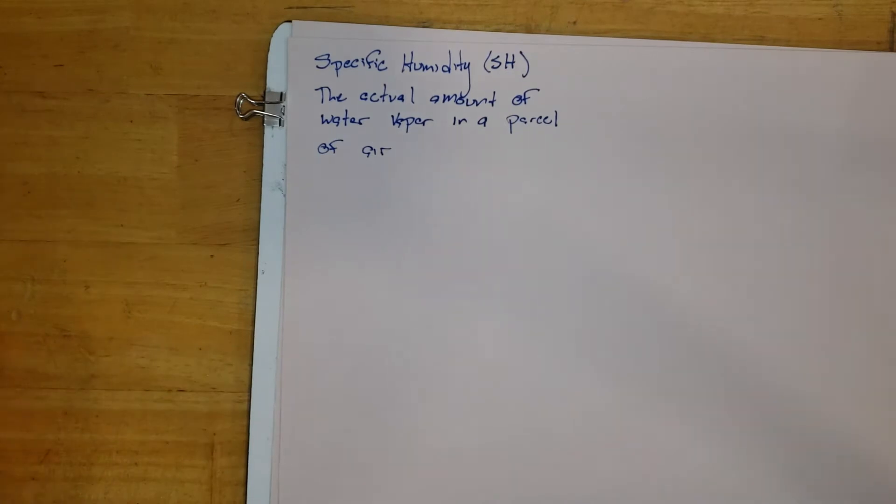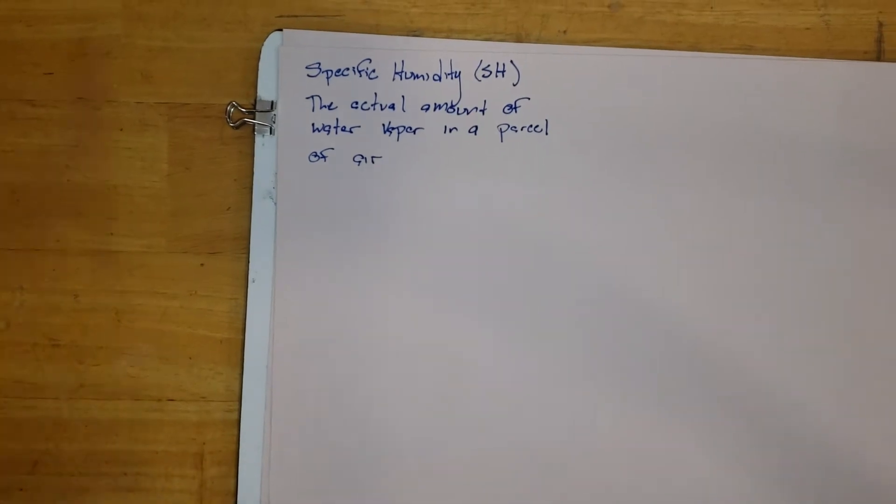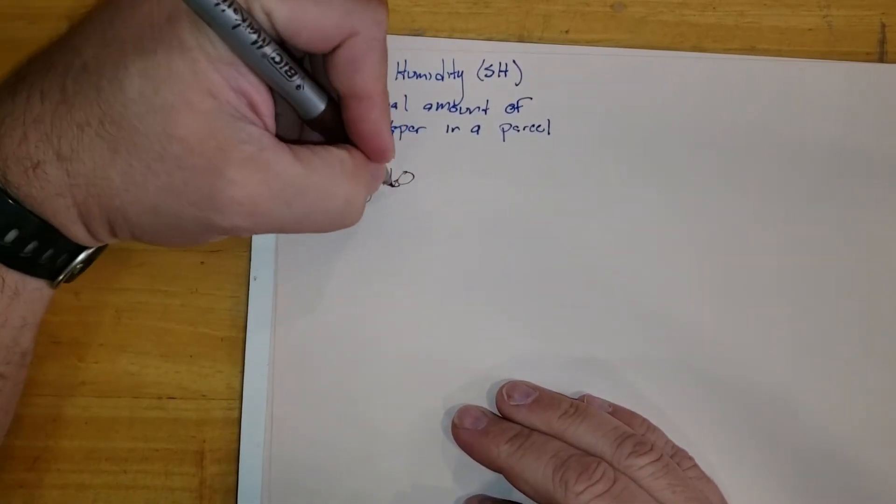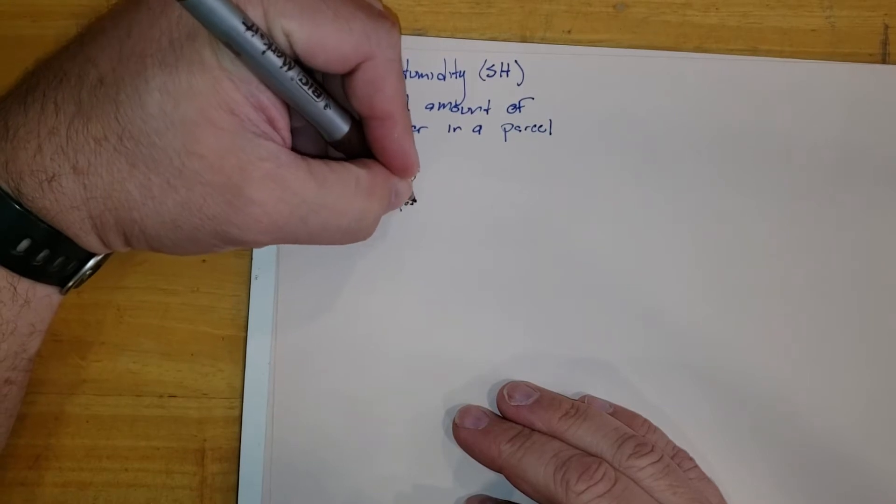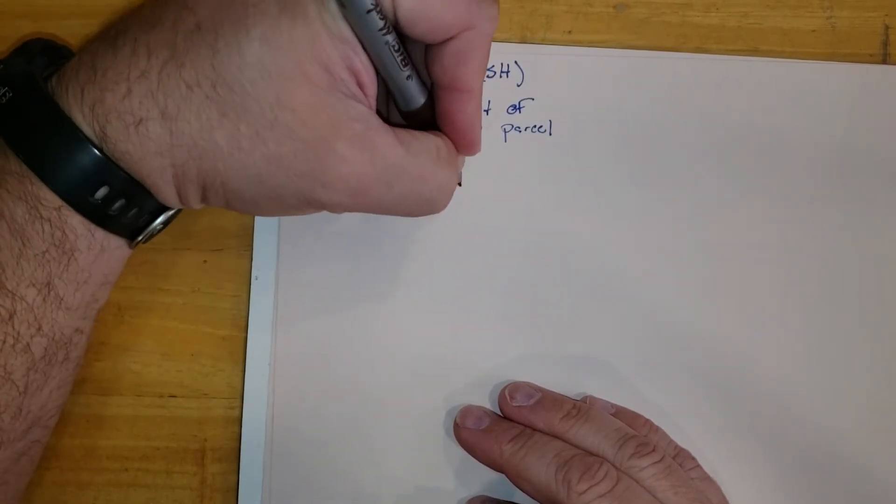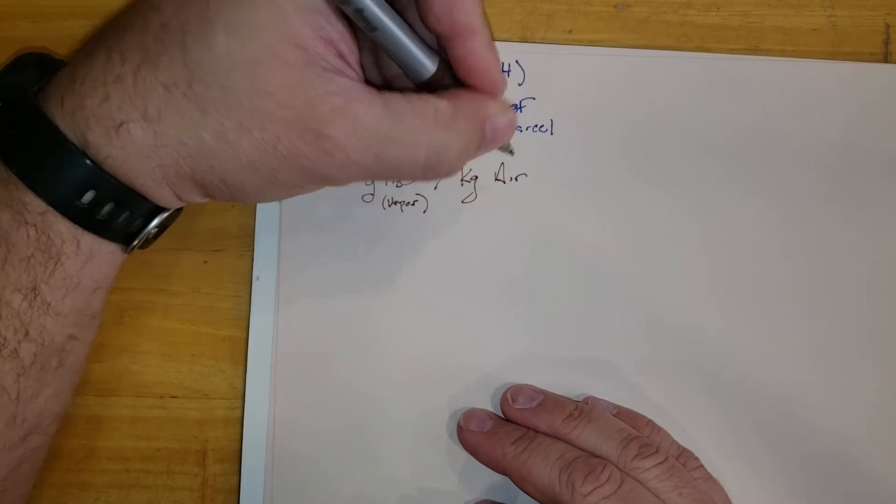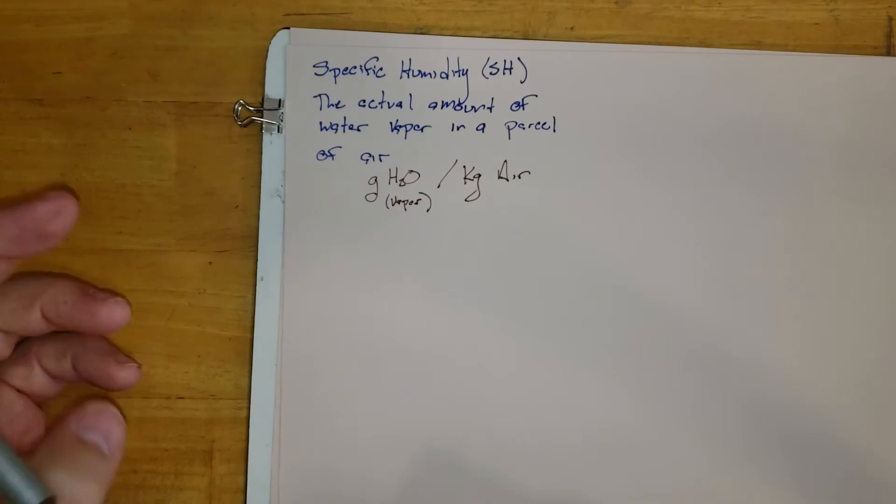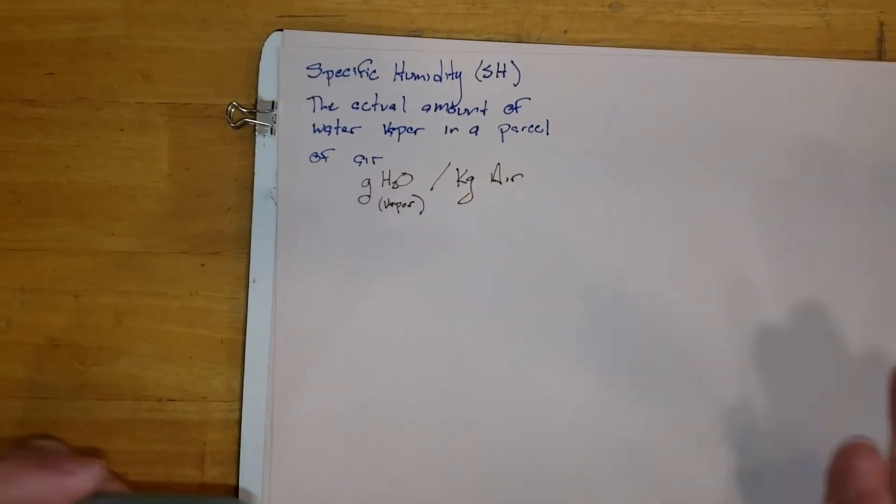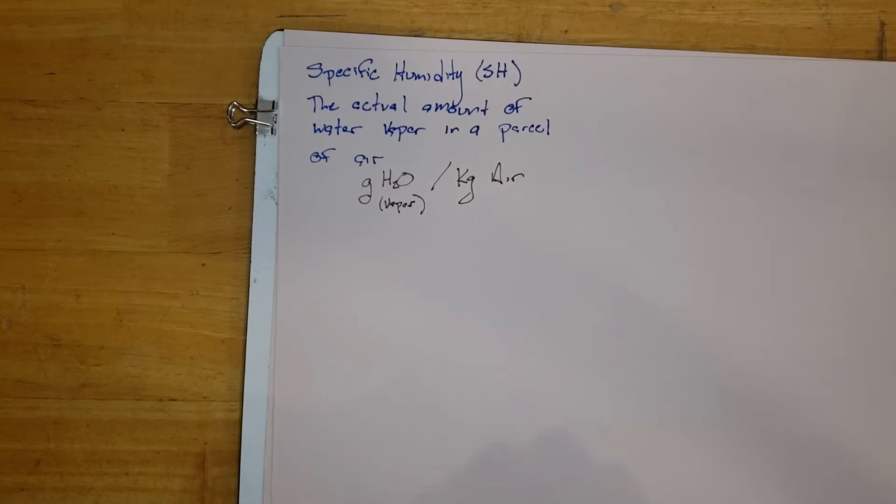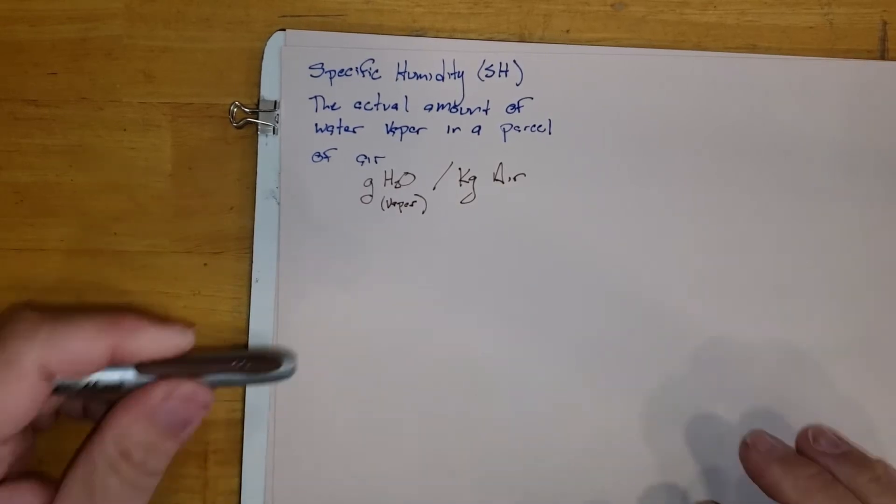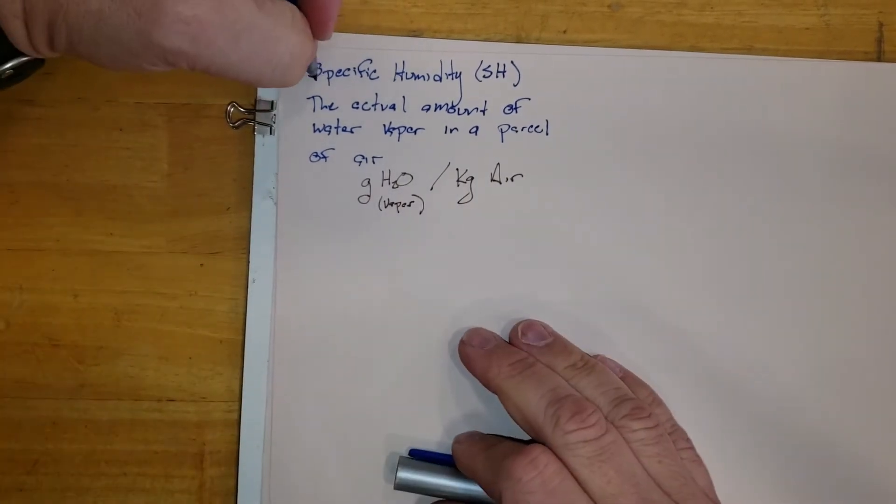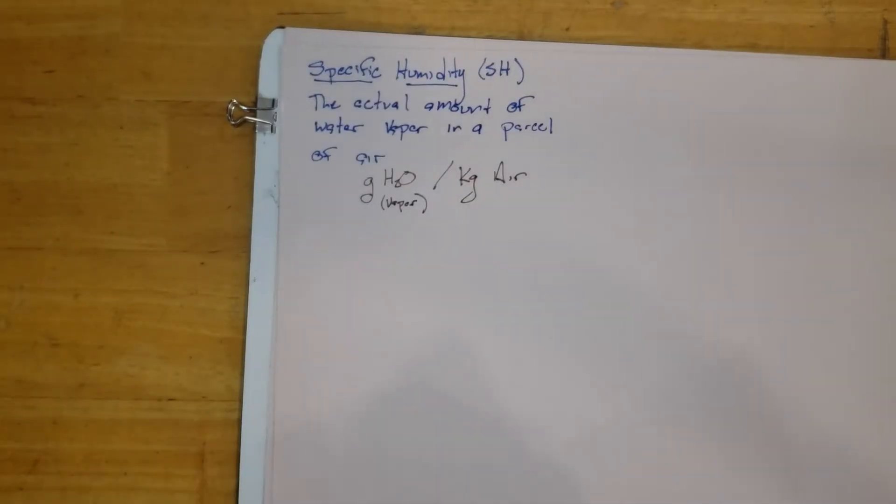Now this number is given in usually grams of water—that's going to be as a vapor—grams of water per kilogram of air. Now if we could take all of the air in a parcel, compact it down, and measure the weight of all those molecules, we could get to a spot where we could measure it by a kilogram. So one kilogram, how many grams of water per kilogram of air? That's referred to as our specific humidity. That's going to be the actual water that's there.